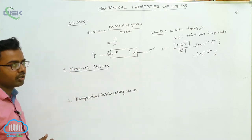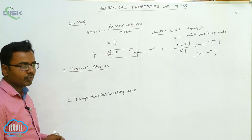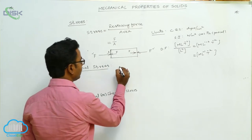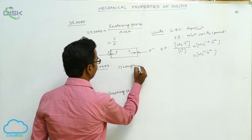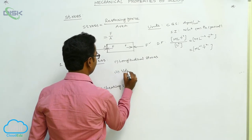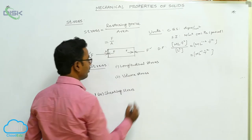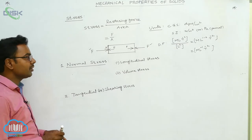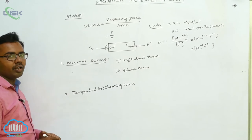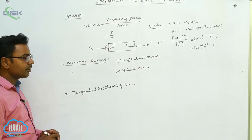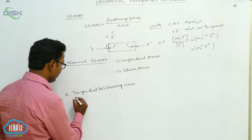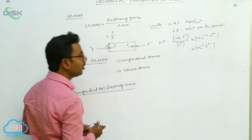Normal stress acts perpendicular — normal — to the surface area. Normal stress is further divided into two types: longitudinal stress and volume stress. Both are perpendicular to the surface of the body. Tangential or shearing stress, on the other hand, acts parallel to the surface of the body — it is tangential to the surface.